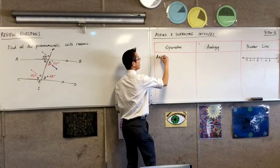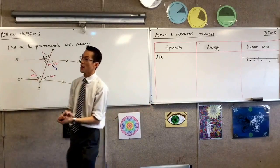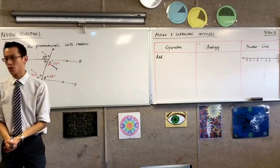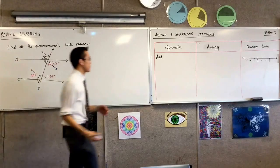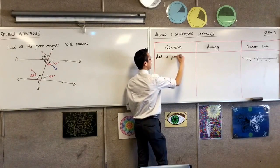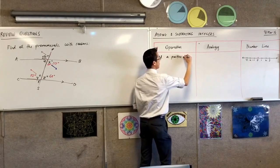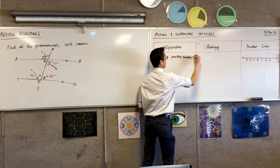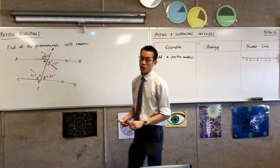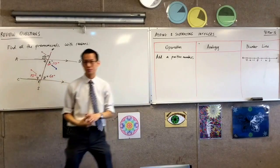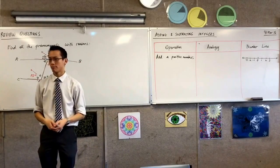If you add a positive number, those are just the numbers we're used to before we even knew what integers were. If you add a positive number, like say you started with zero, like zero is there in the middle. If I add three, that's a positive number.